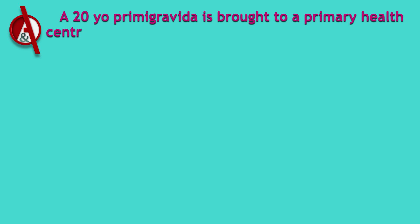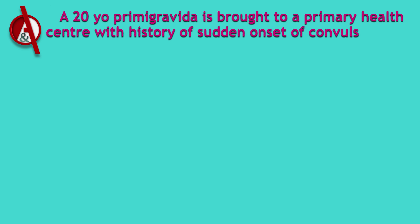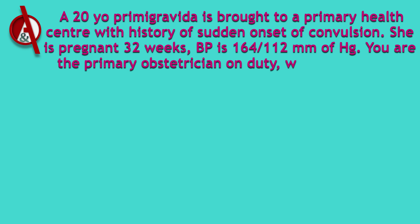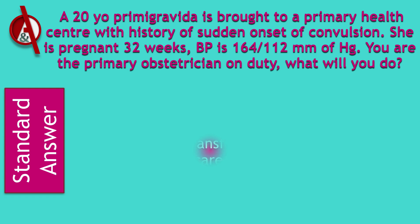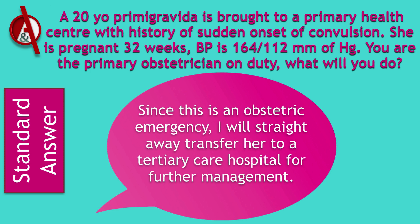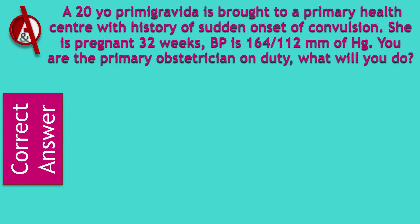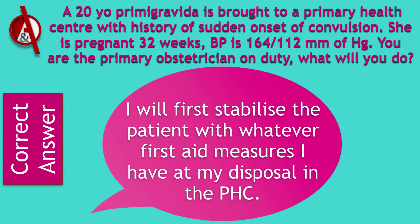I will now present a case. A 20-year-old primigravida is brought to a primary health center with a history of sudden onset of a convulsion. She is pregnant at 32 weeks. Blood pressure is 164/112 mmHg. You are the primary obstetrician on duty. The correct answer is not to immediately transfer her, but rather to first stabilize the patient with whatever first aid measures are available at the primary health center, and then when she is stable, transfer her to a tertiary care center.